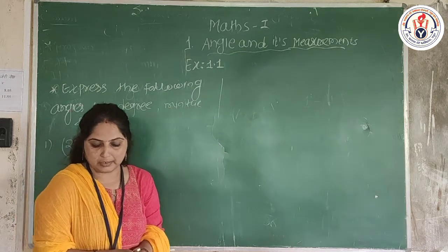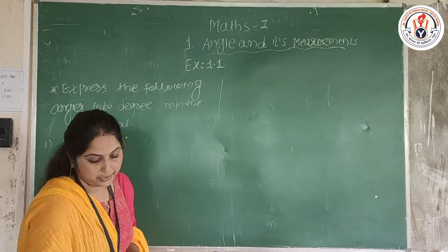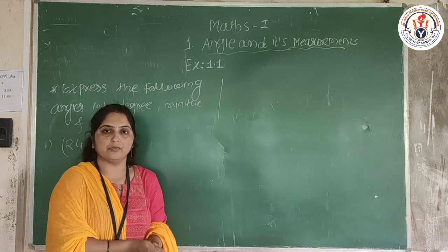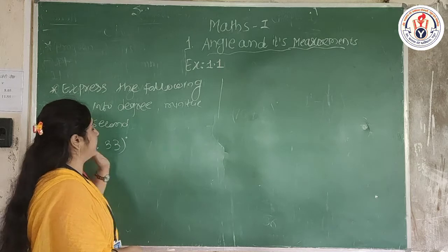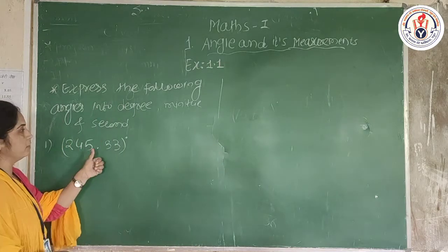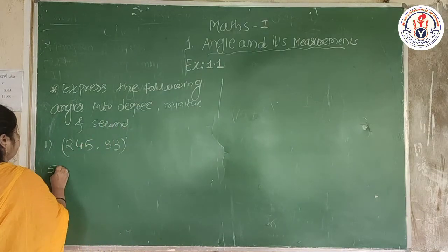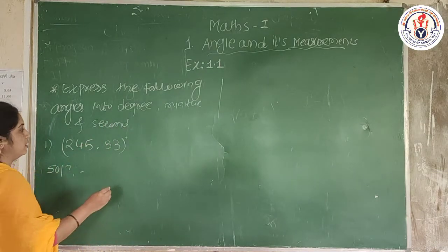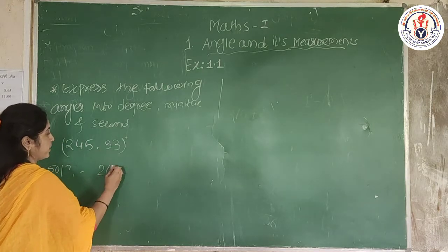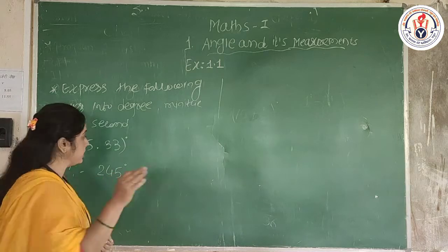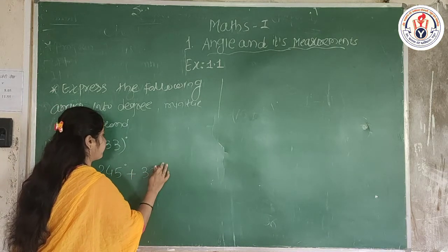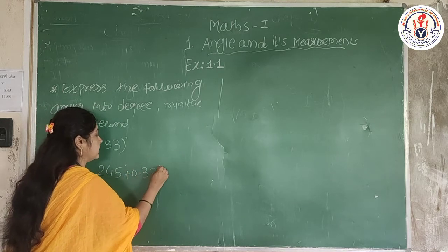Here I have another example. I will take a look at 245.30 degrees. Now I will work through the minutes and seconds. This can be written as 245 degrees plus 0.33 degrees.